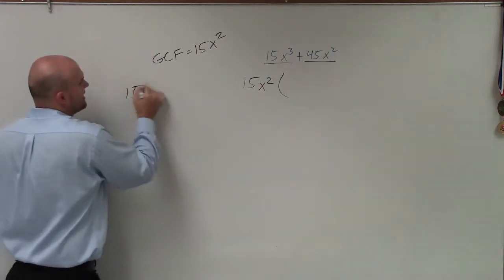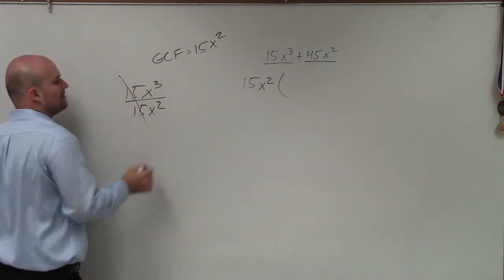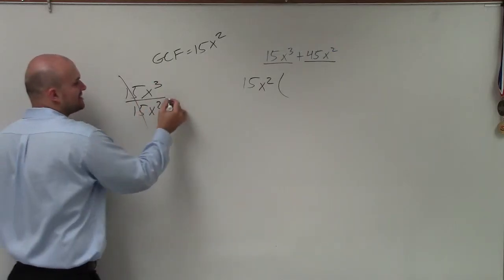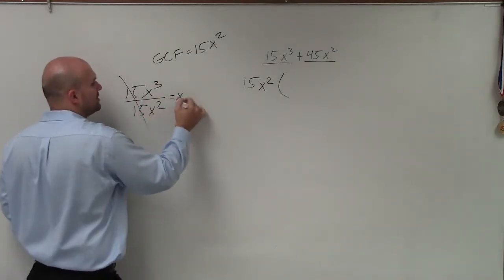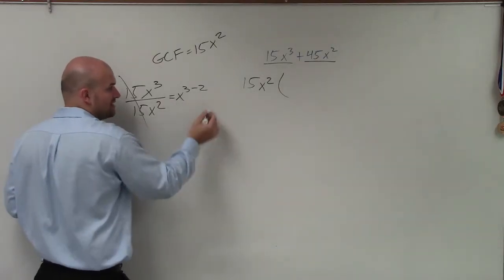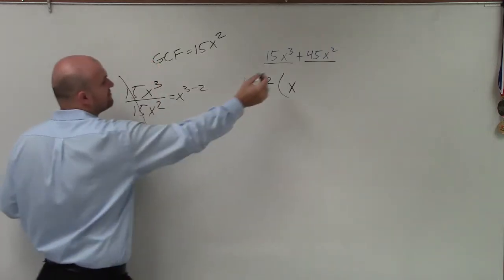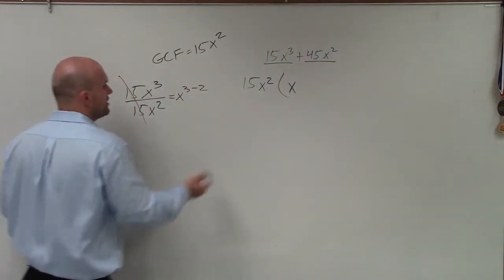So a lot of times, I just write that out separately. 15 x cubed divided by 15 x squared. Well, 15 divided by 15 is 1. x cubed divided by x squared is x cubed minus, or x to the 3 minus 2. Right? You subtract the exponents. So that's just x. And then, I have to divide out 15 x squared from 45 x squared.